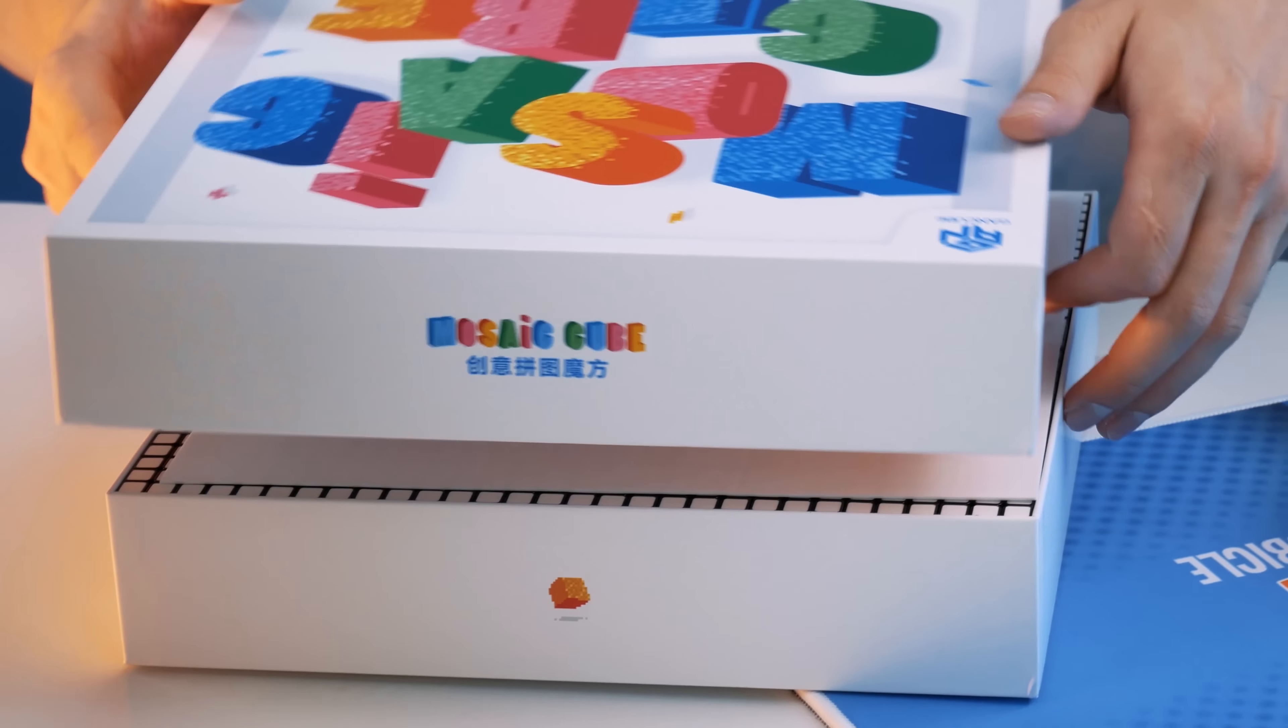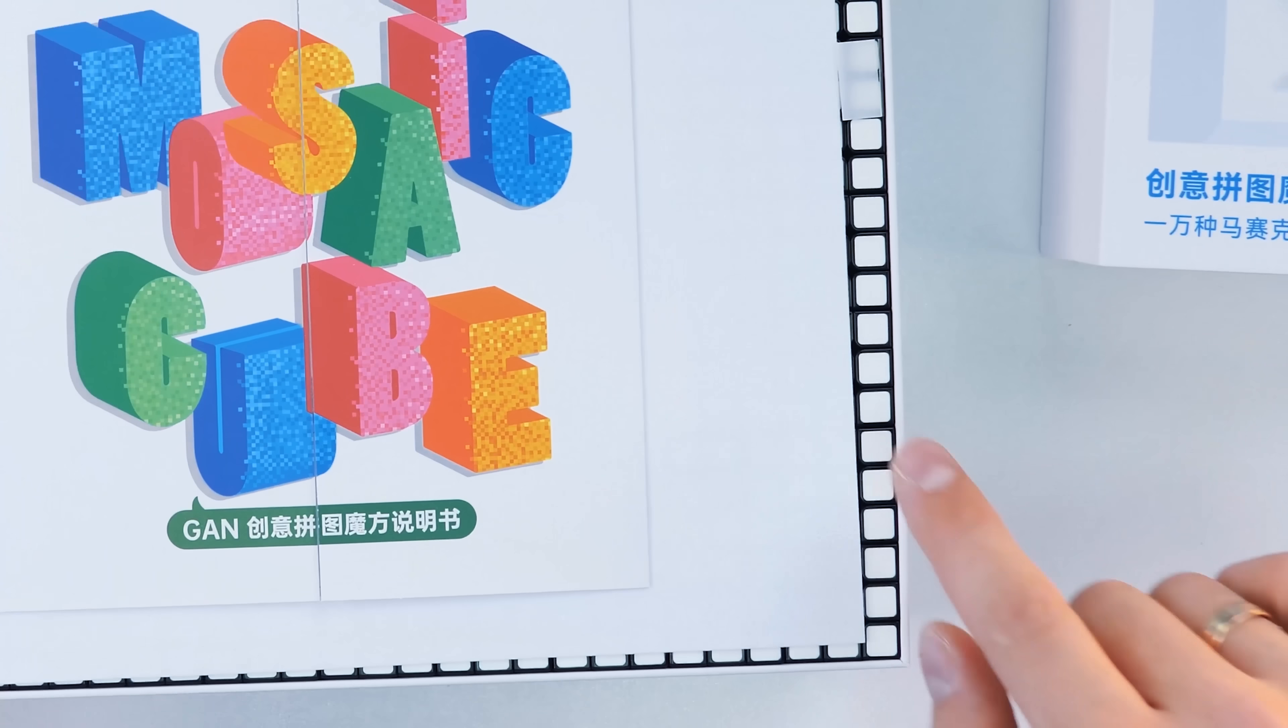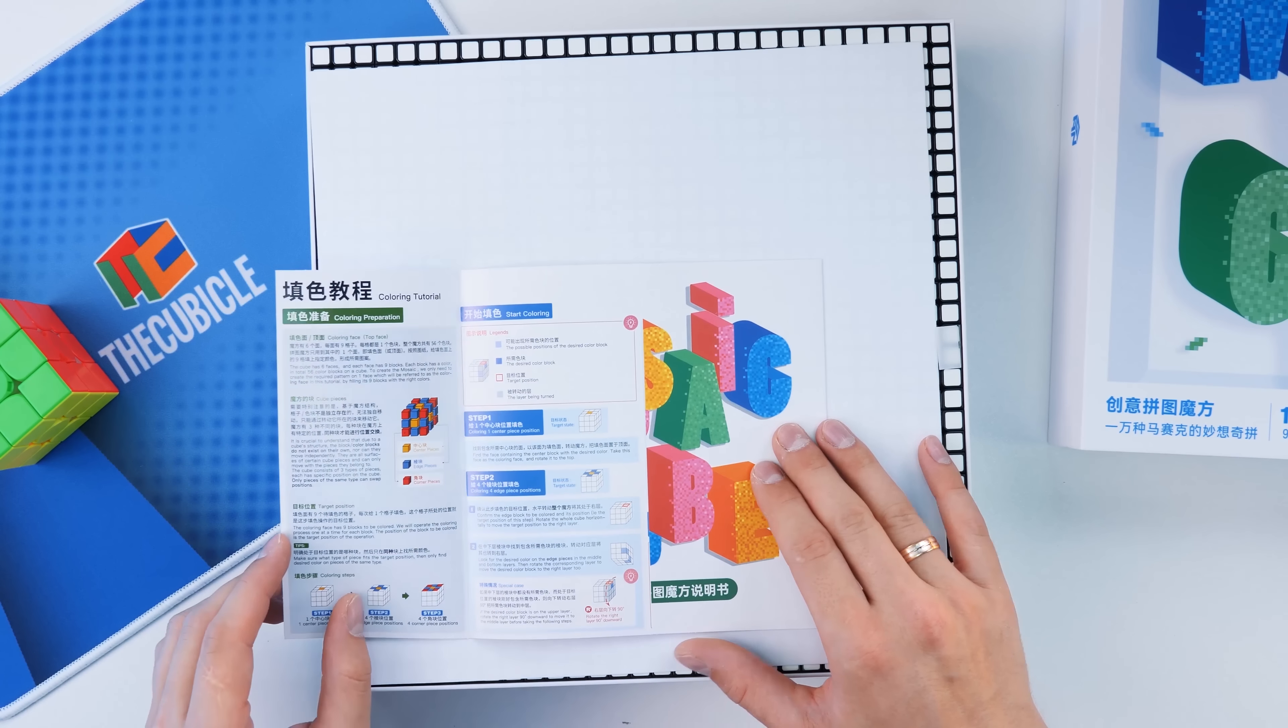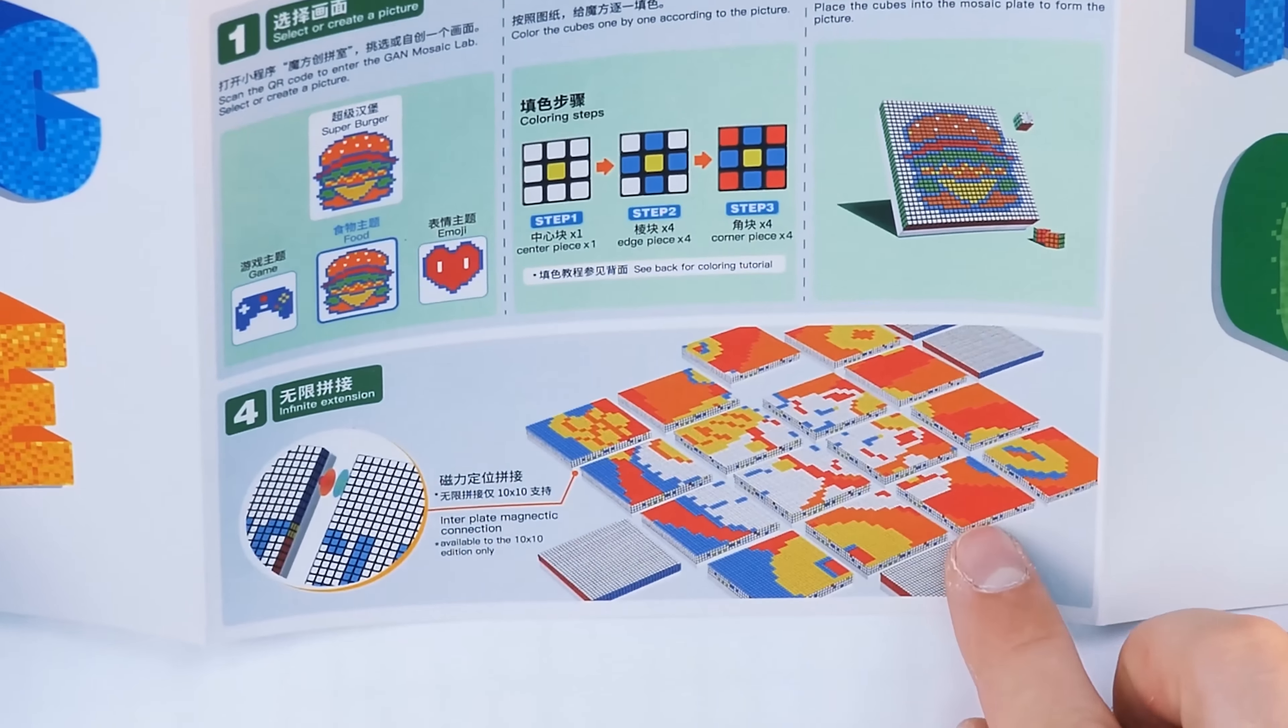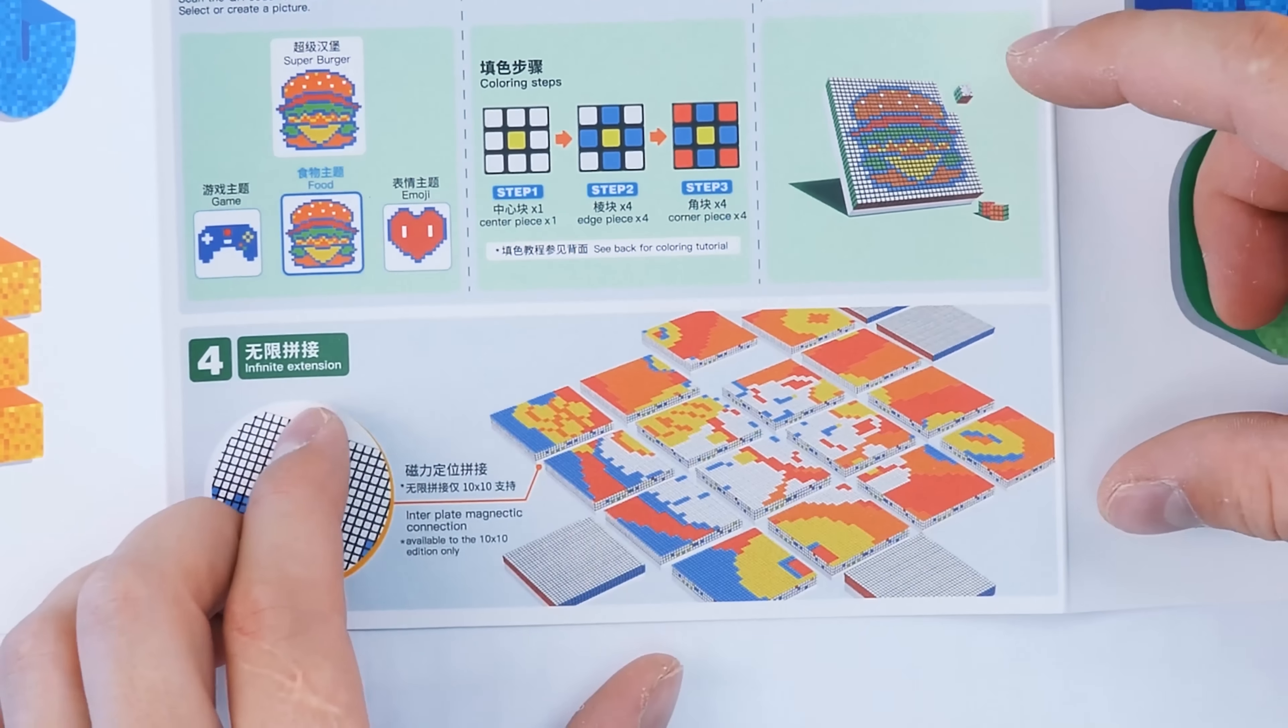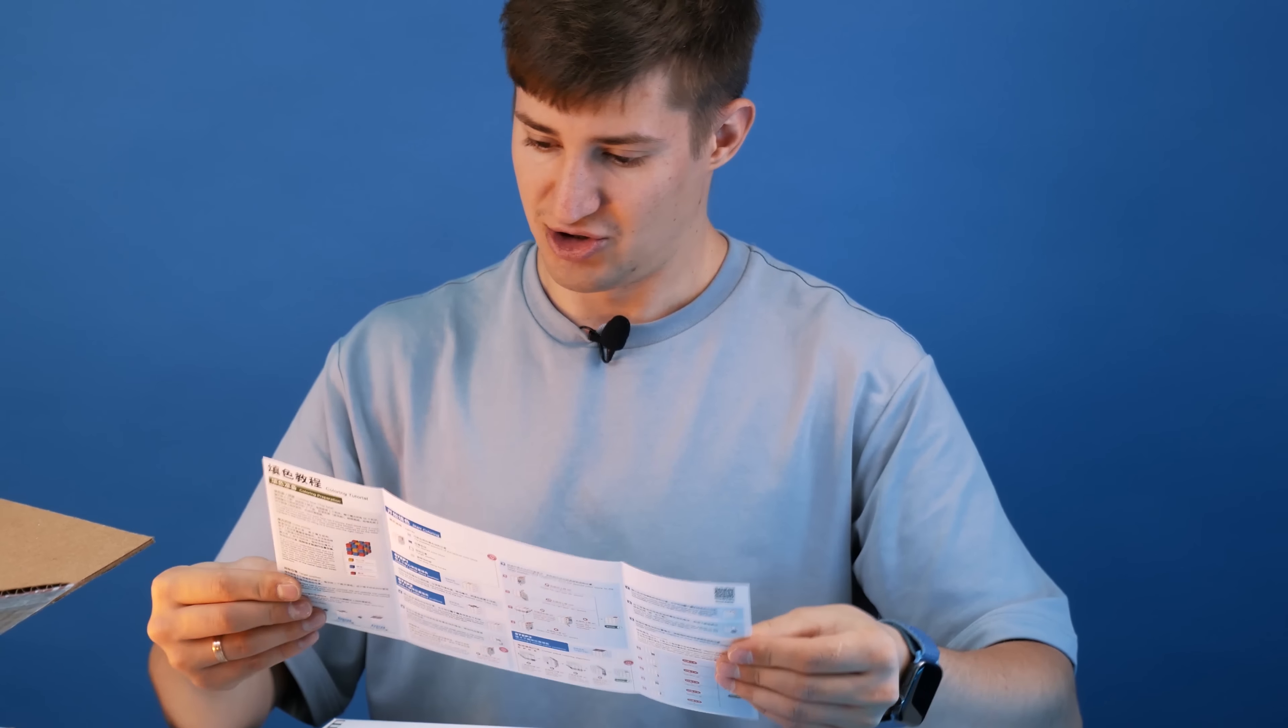So, what do we have here? Mosaic cube. God, I can already see. They are tiny. Really tiny. Cool. Here we have something written in Chinese. But look, as you can see, these 10 by 10 blocks can be combined into an even bigger picture. And so far it looks like this. Mosaic cube.